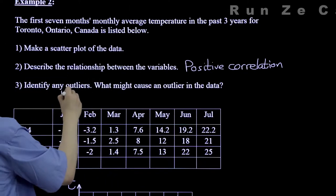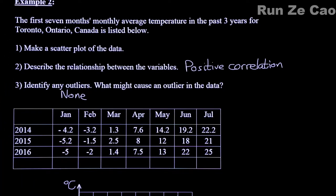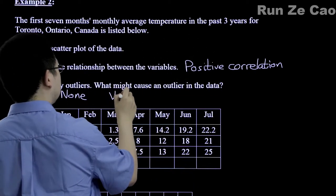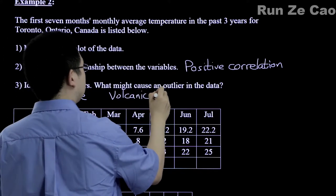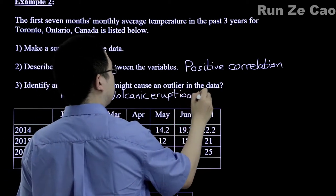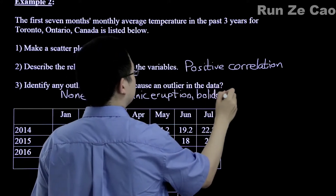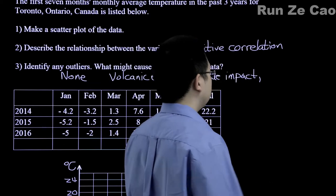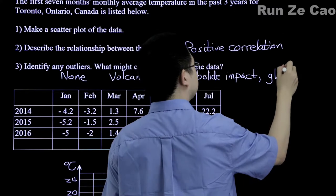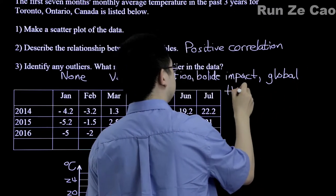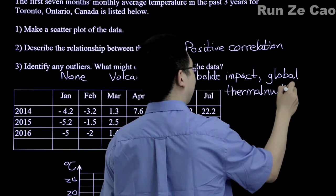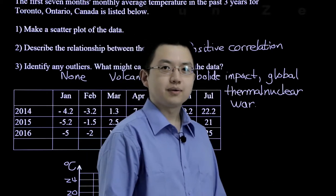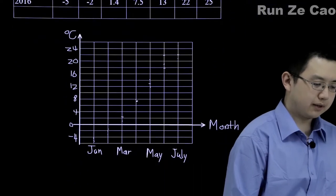Identifying outliers: none. What might cause an outlier in the data? Well, a volcanic eruption — or a bolide impact, also known as an asteroid.